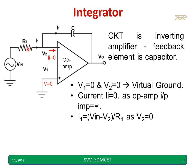I1 is given by VIN minus V2 divided by R1. Two voltage difference divided by R1. Whereas V2 is 0 hence I1 will be VIN divided by R1.